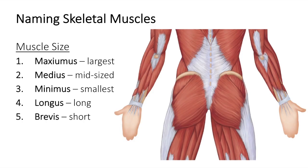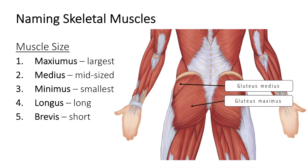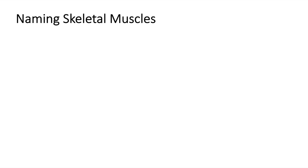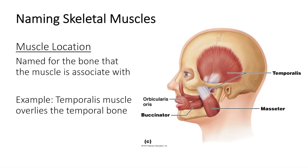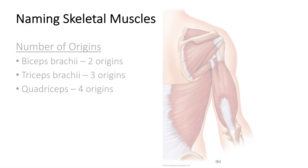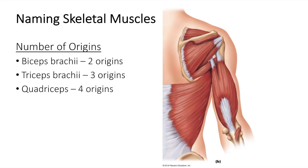Terms such as maximus (largest), minimus (smallest), longus (long), and brevis (short) are often used in naming muscles — for example, the gluteus maximus is larger than the gluteus medius. Some muscles are named for the bone with which they are associated; for example, the temporalis muscle overlies the temporal bone. When the term biceps, triceps, or quadriceps forms part of a muscle name, you can generally assume that the muscle has two, three, or four origins respectively — for example, the biceps brachii has two origins.